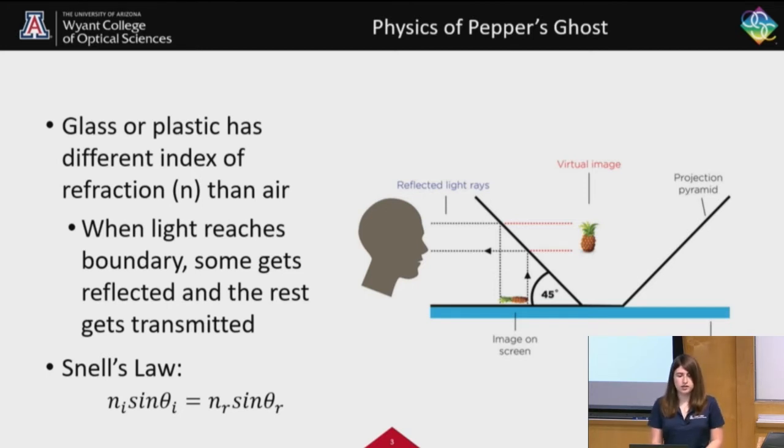And then the n_r means the index of refraction of the reflected aspect. So what that means is when the light hits that boundary and travels through the glass or plastic. For this demonstration, it's going to be plexiglass. So when the light hits that plexiglass, it bends a certain way. And that's governed by the index of refraction of that plexiglass along with the angle at which that light is bending.